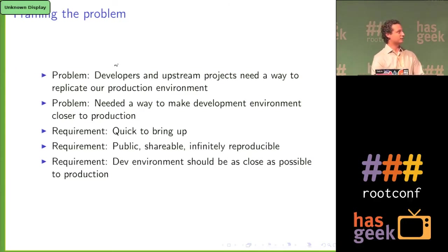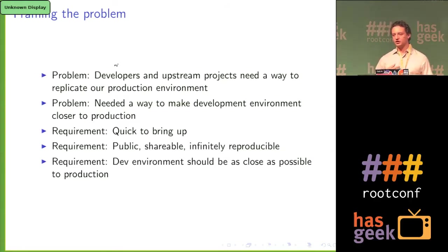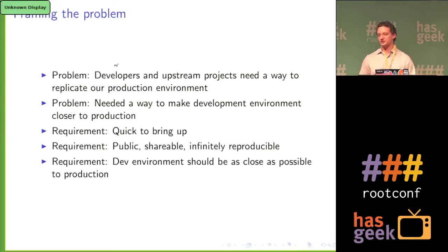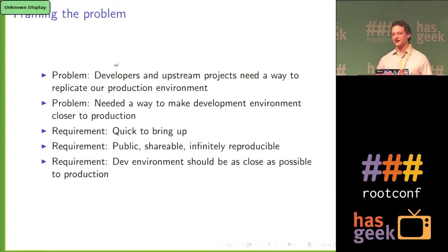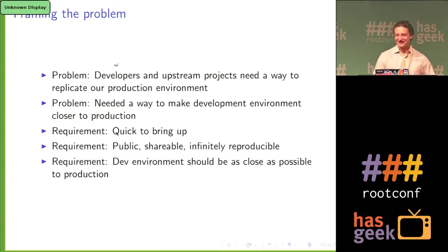Additionally, we wanted a way to make the development environment for our developers really close to production. What normally happens — and you hear this a lot — is a kind of fight between sys admins and developers. Developers will code on their laptops, which usually means it's running macOS or something like that, and production is going to be something like Red Hat Enterprise Linux. These two are very different when it comes to libraries that their applications are using. This ultimately results in the developer saying, 'it worked on my machine, why doesn't it work in production?' We wanted to minimize that because we were sick of hearing that excuse.